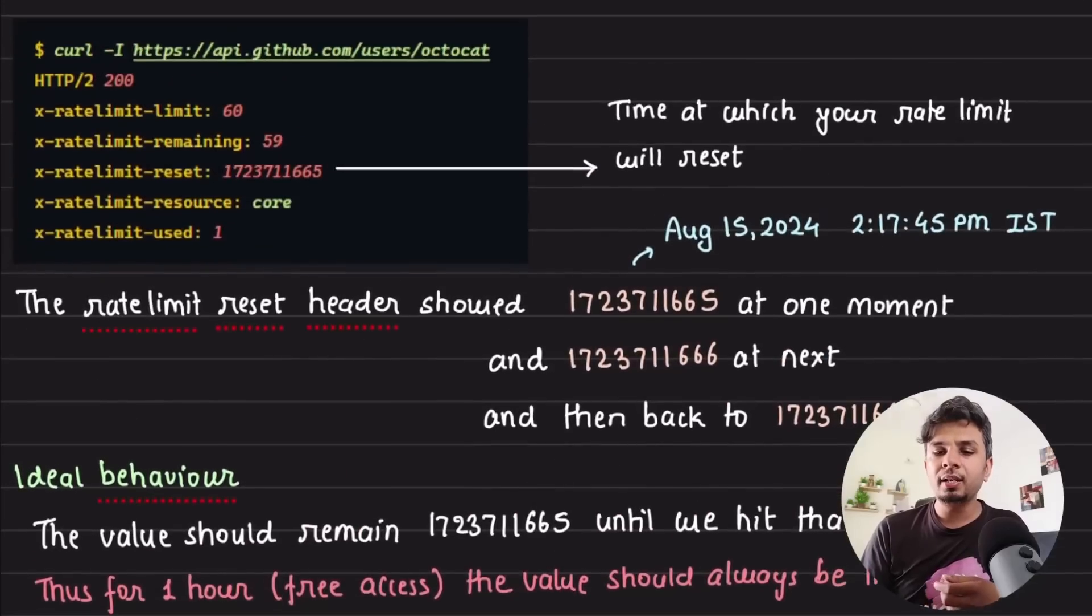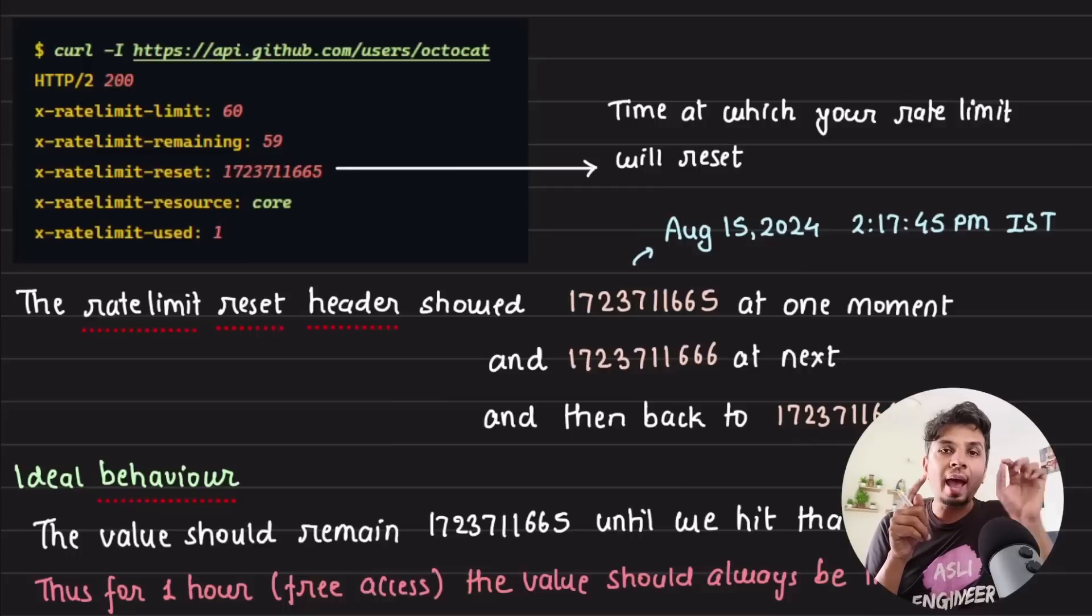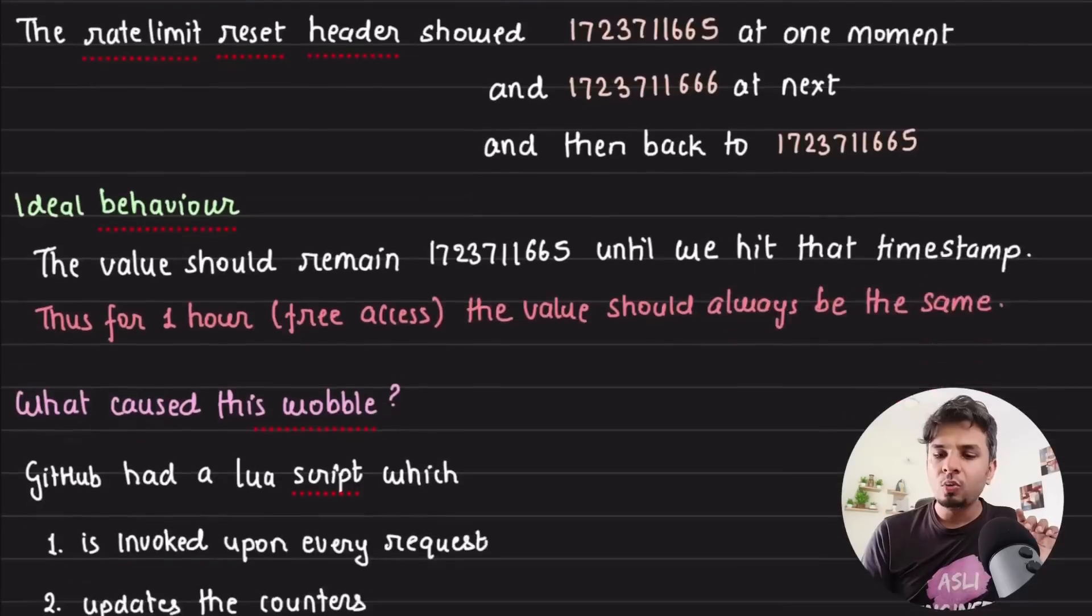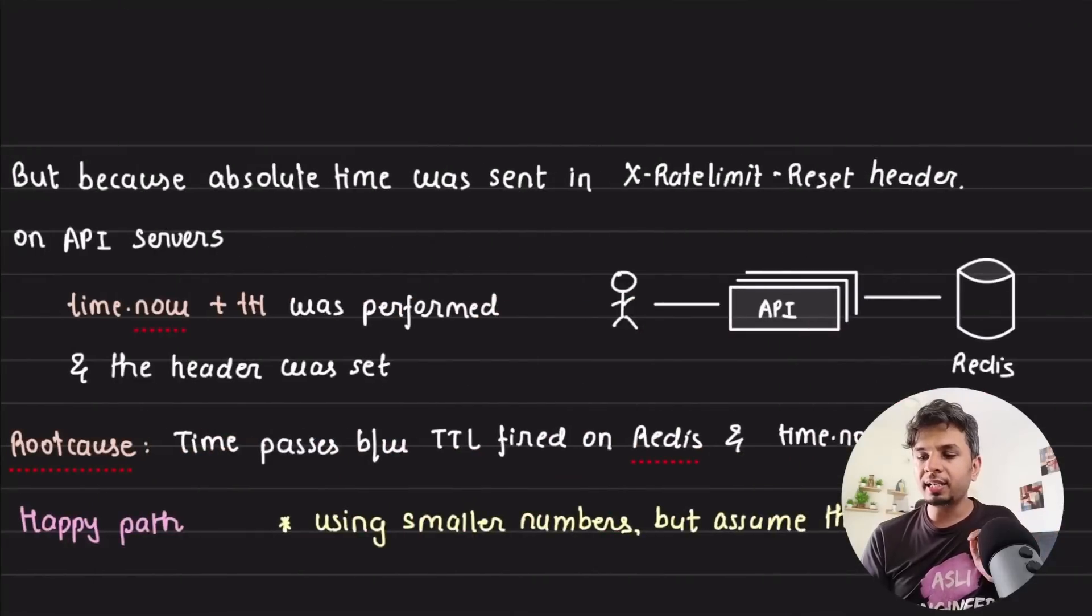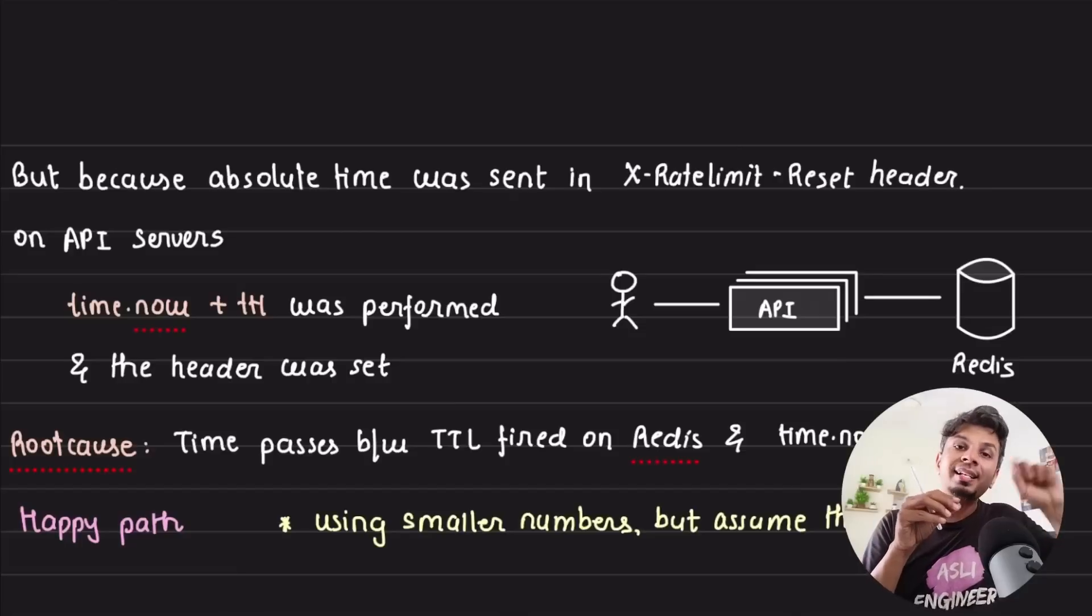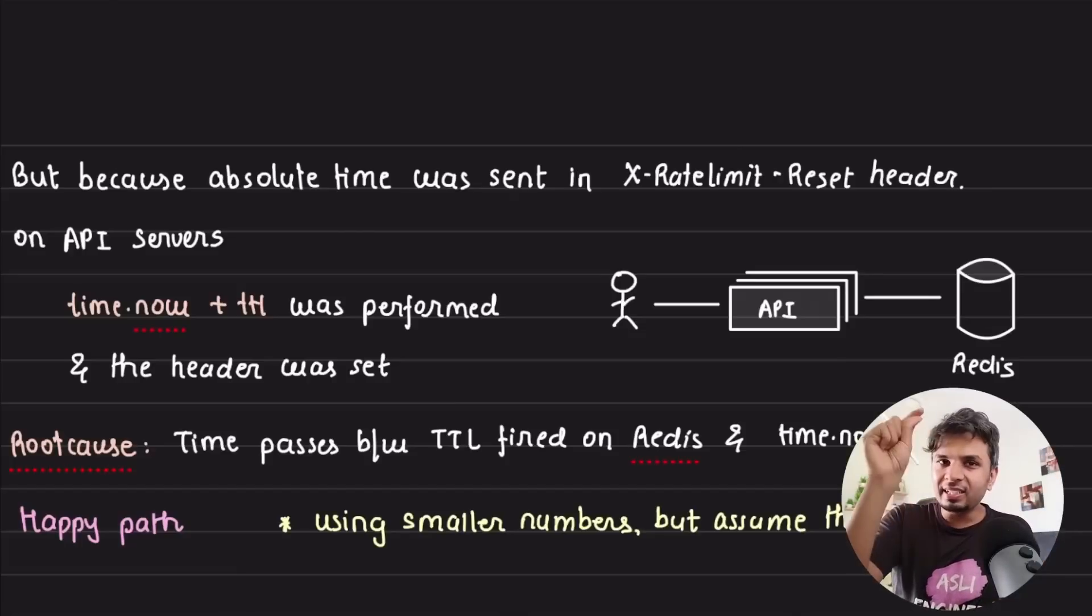Now this is what is then sent back to the user in the x-rate-limit-reset header. But if you observe, reset does not send a delta; it's the absolute time at which the key will expire. So what happens is when your request goes to your GitHub API server, GitHub API server fires the Lua script on Redis, gets the TTL. Now on this server, it adds time.now plus TTL, sets it in the reset header, and responds back to the user.